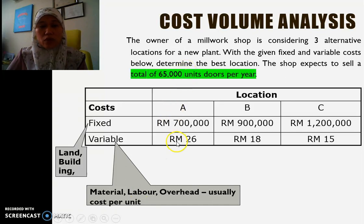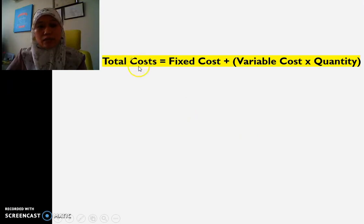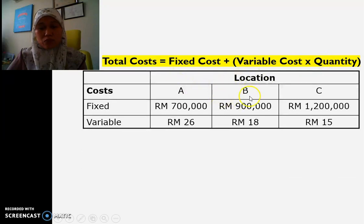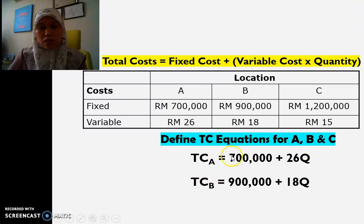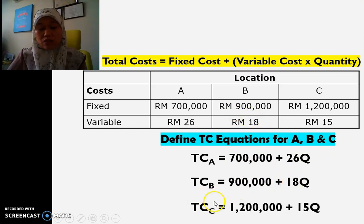For this case, one door in location A costs about RM26 per unit, and so on. The first step is to get the total cost equation for the three locations. The total cost formula is fixed cost plus variable cost times quantity. So for TCA: fixed cost is RM700,000 plus RM26Q. For TCB: RM900,000 plus RM18Q. For TCC: RM1,200,000 plus RM15Q.